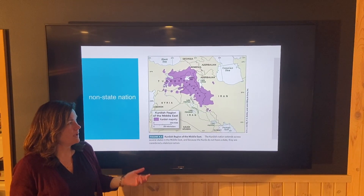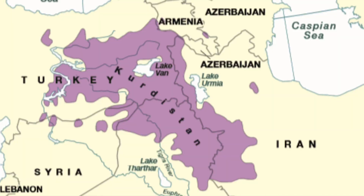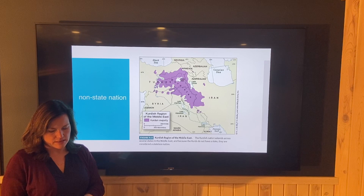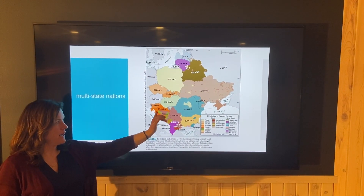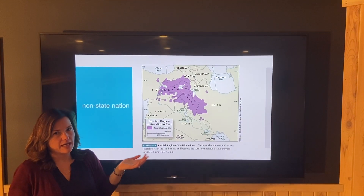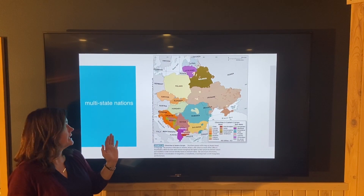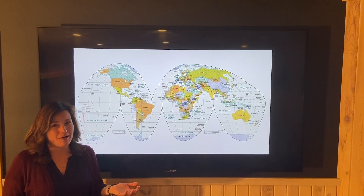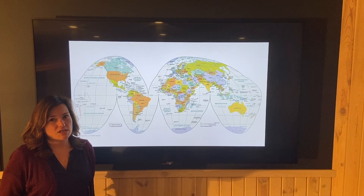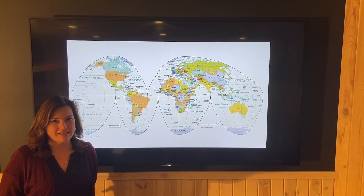A non-state nation — the major example people use are the Kurds. They are a nation that spans many states but they don't have their own home state — a state where they are the majority and can define that state as theirs. The Serbs have a state and the Croats have a state; they just extend over borders into other states, making them multi-state nations. But non-state nations have no state of their own. When you look at a political map of the world's 190-plus countries, none of them is truly a nation-state, and what's hidden are the non-state nations — you have to think geographically and dig deeper to see what's really going on.